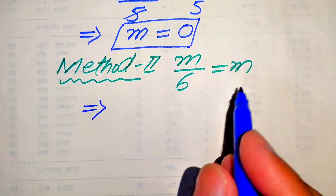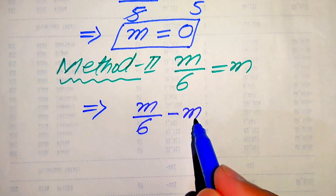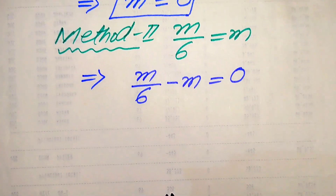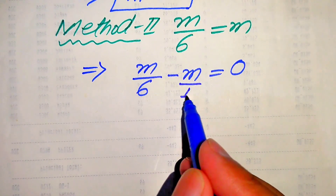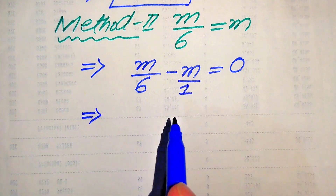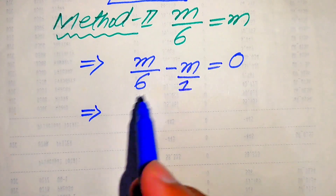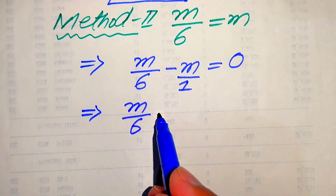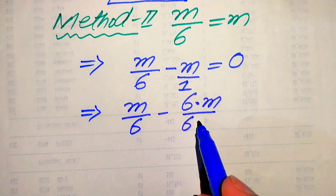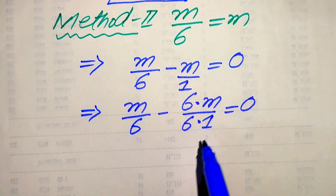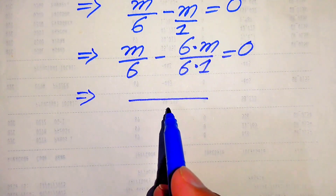We move this m to the left hand side, so it is written as m over 6 minus m equals 0. In the second method we take the LCM of these terms. The denominator of the second term is 1, so to make both denominators equal to 6, we multiply and divide that term by 6, giving us 6 times m divided by 6 times 1, and the whole equation equals 0. We can then easily take the LCM, which becomes 6.